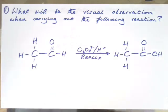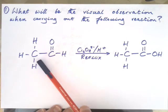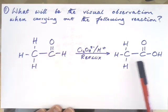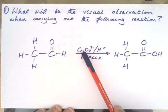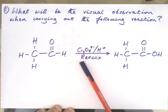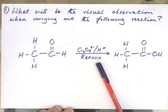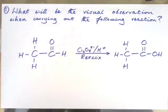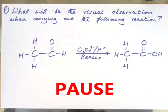What will be the visual observation when carrying out the following reaction? Here we have ethanol becoming ethanoic acid using potassium dichromate and acid under reflux conditions. What would you see during this reaction? Pause the video now and have a think, and then I'll come back with the answer.